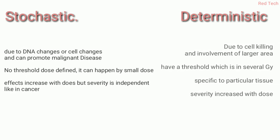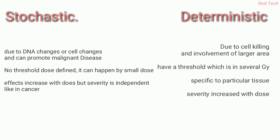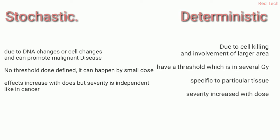The first difference: stochastic effect happens due to DNA changes or cell changes, and can promote malignant disease like cancer or leukemia. In contrast, deterministic effect is due to cell killing and involves a larger area impacted by the dose. In deterministic effects, a particular tissue or area is concerned, whereas in stochastic effects, changes occur at the DNA level.